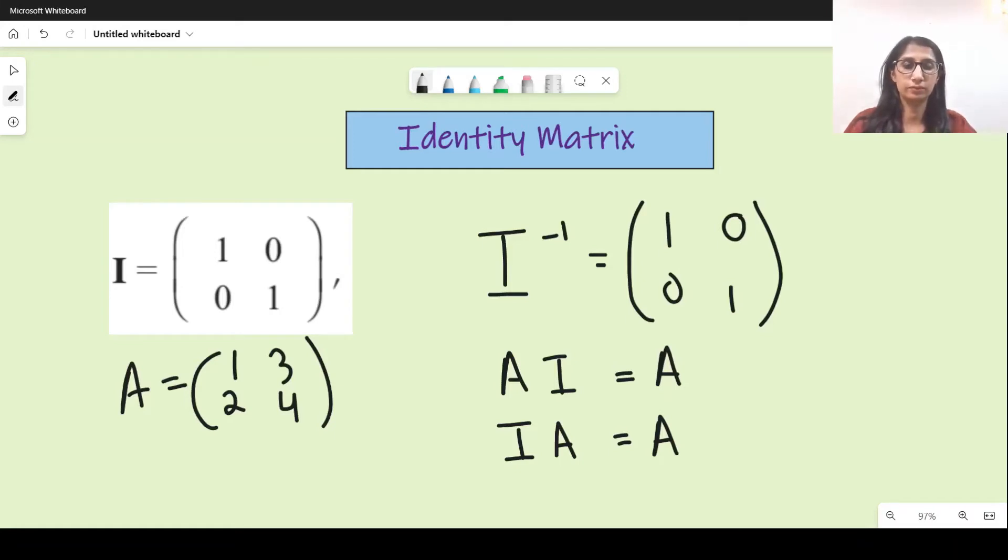Another thing is that if you see three I written somewhere in the question, that just means that you multiply this identity matrix with three. So that's going to be three zero zero three. Every number is going to be multiplied with three, so zero stays zero, one becomes three.